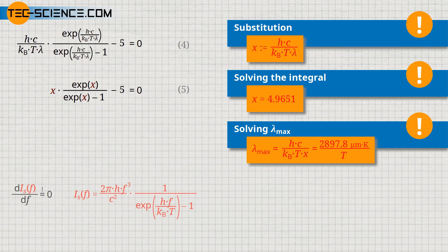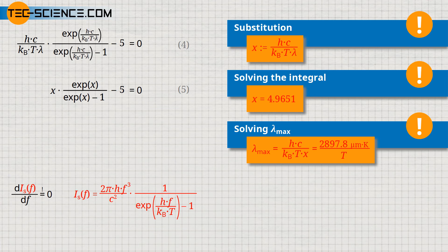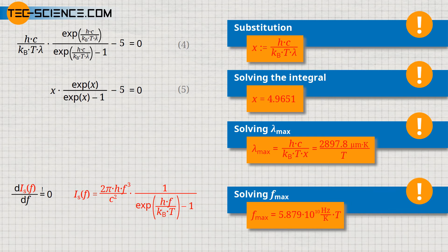The maximum of the spectral intensity can also be determined for the frequency form. For this, the function must be derived with respect to the frequency and then set the derivative equal to zero. Thus, the following equation applies for the frequency at which the spectral intensity becomes maximum at a given temperature.